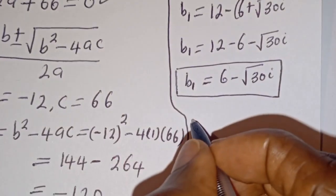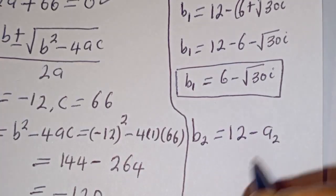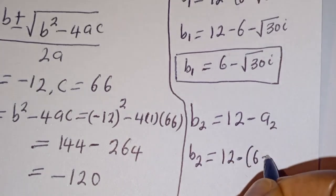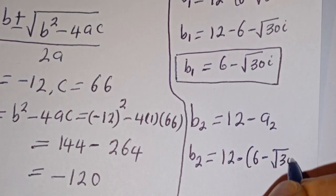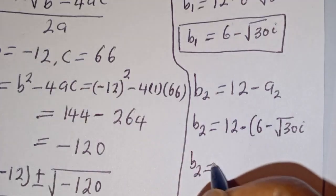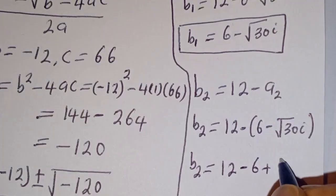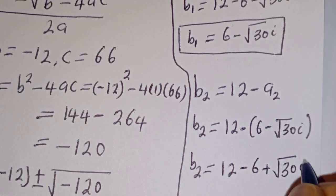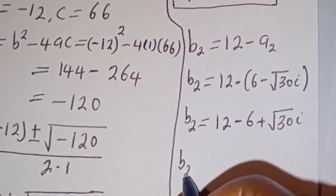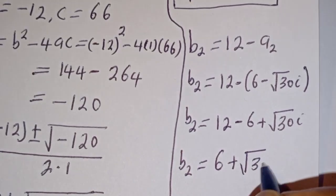Then B2 equals 12 minus A2. B2 equals 12 minus (6 minus square root of 30 i), which is 12 minus 6 plus square root of 30 i. Therefore B2 equals 6 plus square root of 30 i.